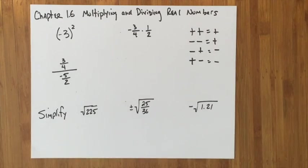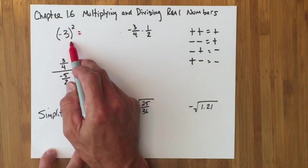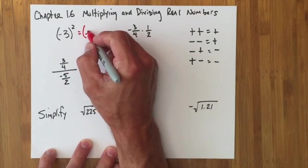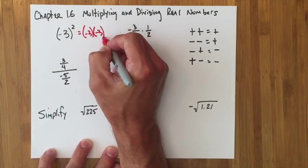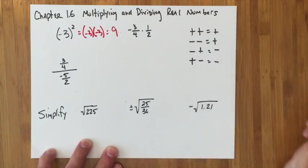Having said that, once again, I'll switch colors. Here comes the exponent again, this exponent is touching the parentheses, so the parentheses is negative 3 times negative 3, and a negative times a negative is a positive, so we get positive 9.